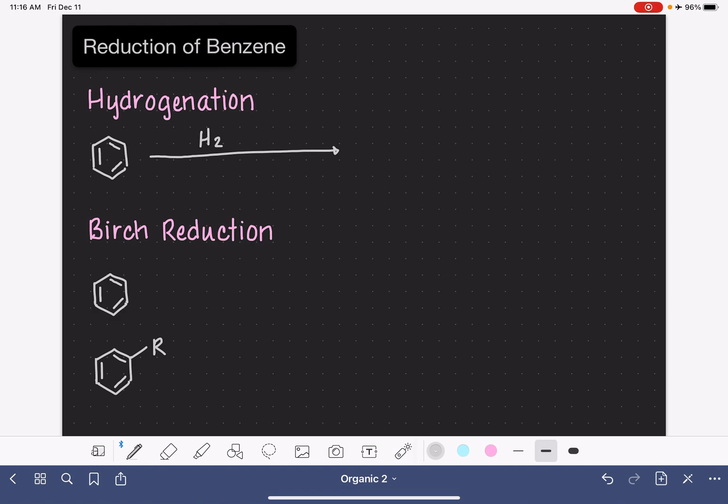So you've seen a lot of hydrogenation reactions before, but none that are this extreme. In this reaction, we're going to need three equivalents of hydrogen gas for every one benzene molecule because of the three double bonds.